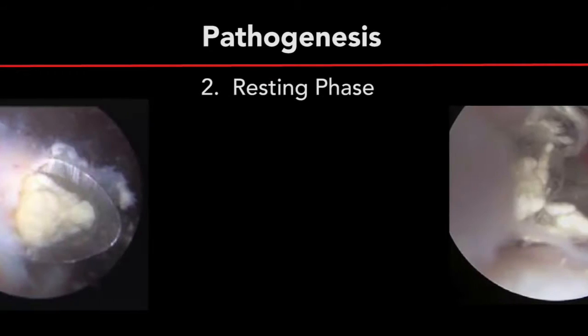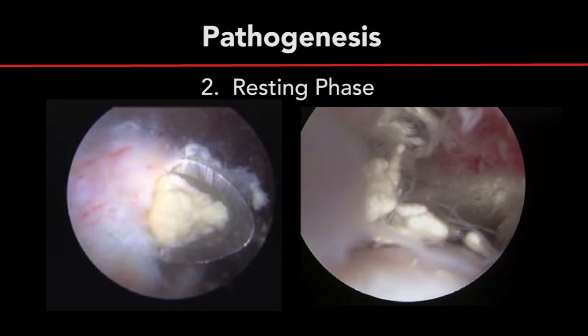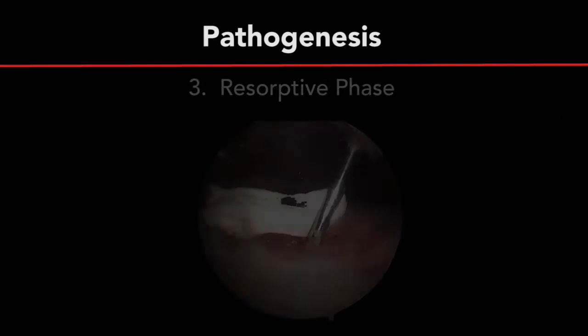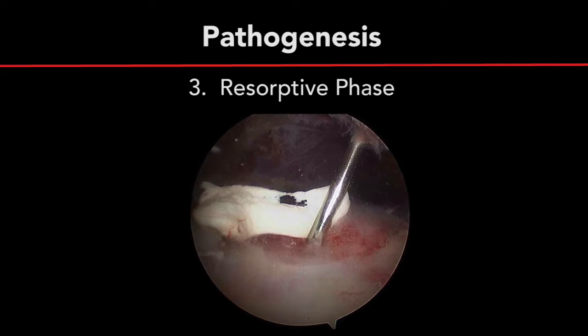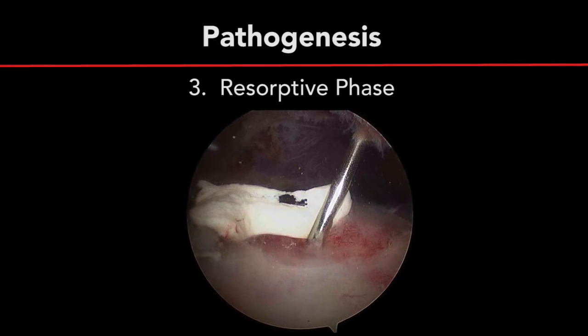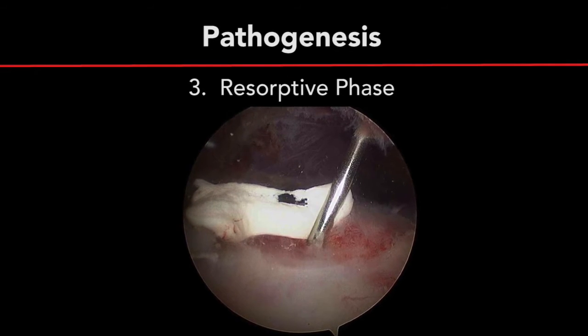Second is the resting phase, where fibrocartilaginous tissue encircles and isolates the calcium deposits. Finally, a resorptive phase occurs, during which patients become symptomatic.